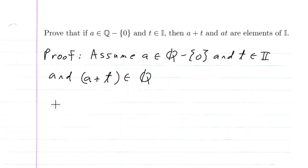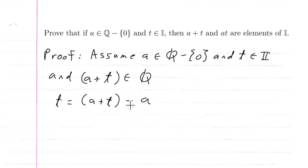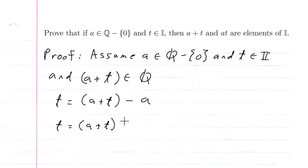We know that T is equal to A plus T minus A, because A minus A is zero and you're left with T. We've proven in a previous video that the sum of two rational numbers is rational, so we can always write this as a sum: T is equal to (A plus T) plus negative A.